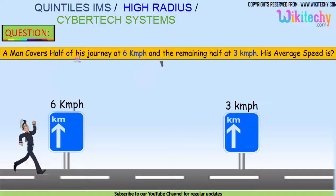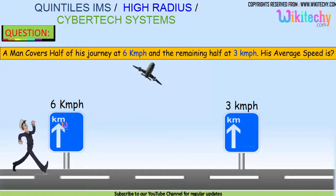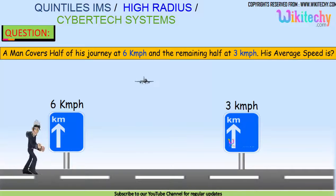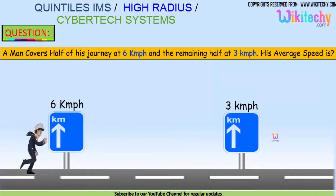A man covers half of his journey at 6 km per hour and the remaining half at 3 km per hour. What is his average speed?